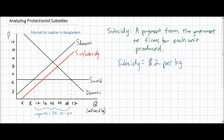Here we see the supply curve of leather produced in Bangladesh with the $2 subsidy. Notice that the supply of leather has shifted outwards, or graphically downwards, by the amount of the subsidy. The vertical distance between the old supply curve and the new supply curve is exactly $2. This is because for every kilogram of leather produced by Bangladeshi firms, a $2 subsidy will be granted to the firms in addition to the price that consumers pay. Domestic leather producers will now be willing and able to produce a greater quantity — the quantity supplied has increased to 15 million kilograms, whereas previously it was only 10.